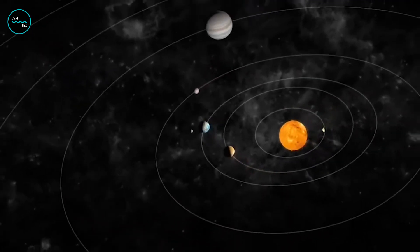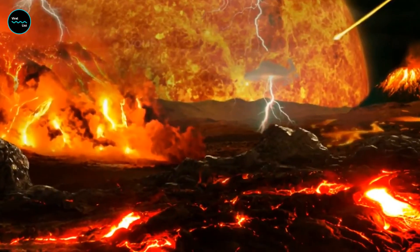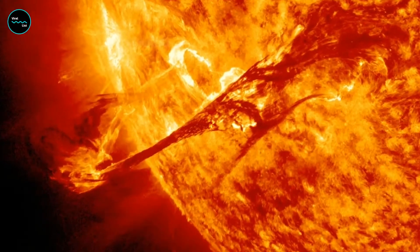The sun lies at the heart of the solar system, where it is by far the largest object. The sun was born about 4.6 billion years ago.